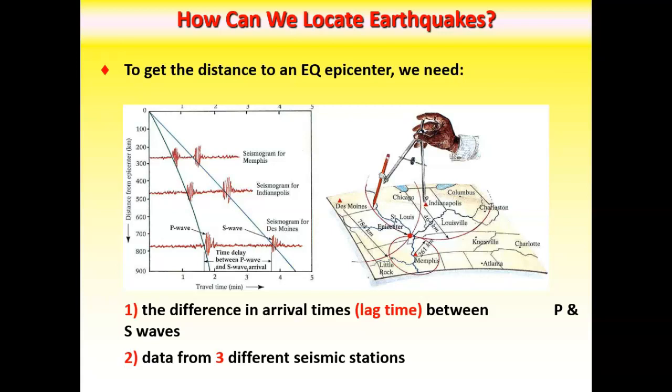We need seismograms. We need the lag time, the difference in arrival between the P and the S. And we do need a chart that gives us a relationship between lag time and distance. We have all that. We can use those three to plot and where they intersect, that is our epicenter.